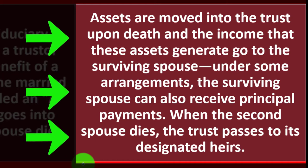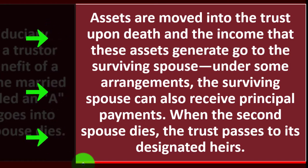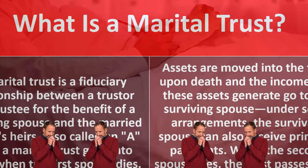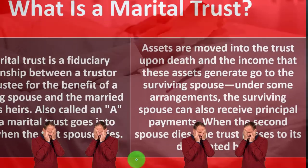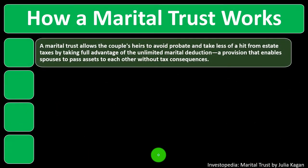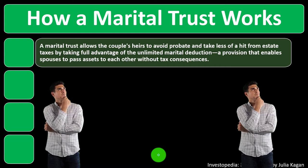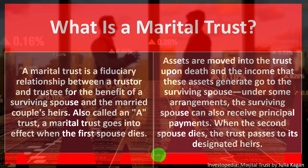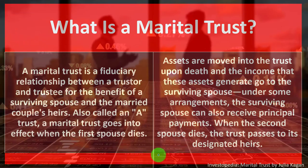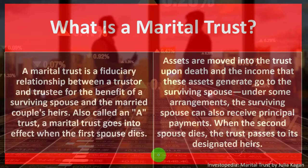The trust helps to smooth out the process and make it easier than going through probate. Assets are moved into the trust upon death, and the income those assets generate goes to the surviving spouse. Under some arrangements the surviving spouse can also receive principal payments. When the second spouse dies, the trust passes to its designated heirs — similar to a will but in trust format.